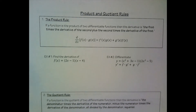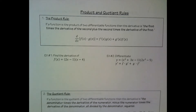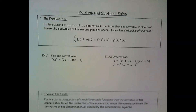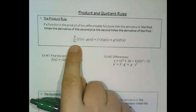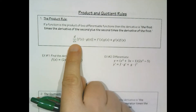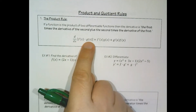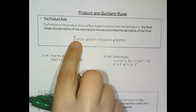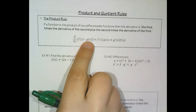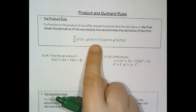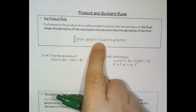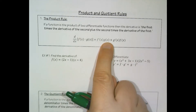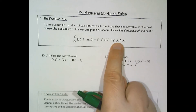In today's video we're going to be focusing on the product and quotient rule, and this is going to open up a whole new level of functions that we can find derivatives of and therefore tangent lines of. The idea is that we're going to be taking the derivative of two functions being multiplied together. When we had two functions added together, we could just take the derivative of each separately, but in the case of multiplication we have this rule: the derivative of the first times the second plus the derivative of the second times the first.